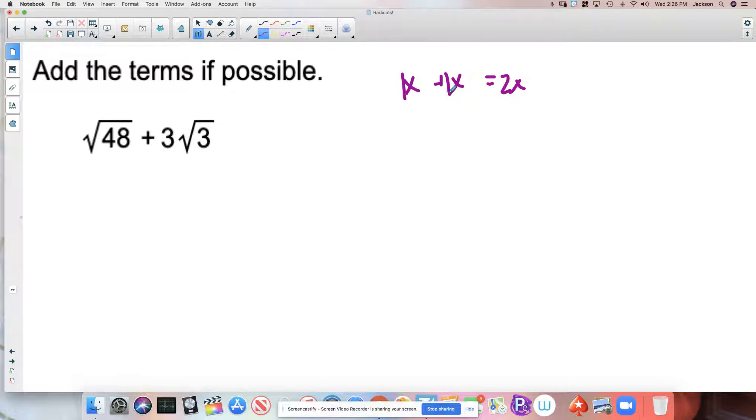So we add the numbers that are in front if the variables are exactly the same. If I said what's 1x plus 1y, you wouldn't do anything. There's nothing to do here because the variables are different. That same logic applies to radicals.